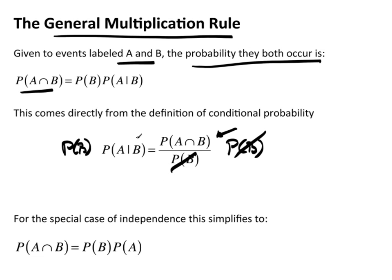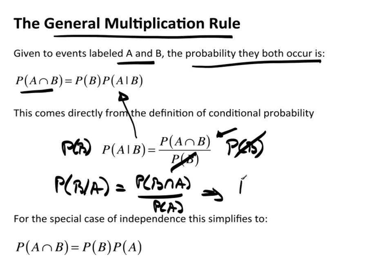Now, obviously, I could also do this as the probability of B given A equals the probability of B and A divided by the probability of A, which implies the probability of A times the probability of B given A equals the probability of B and A.